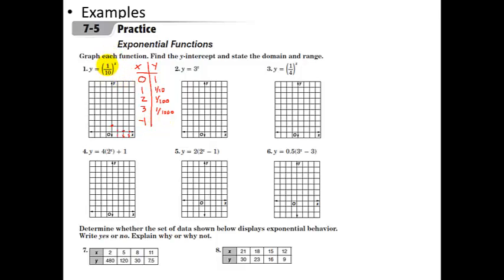If x is negative 1, we have 1 tenth to the negative 1. A negative exponent means flip it, so we get 10. And at negative 2 we get 100. So my function is skyrocketing on the left side. The graph comes down from extremely large values and very, very rapidly drops down to almost nothing. Every time I move forward one unit, I have only 1 tenth as much as before — going from 100 to 10 to 1 to 1 tenth to 1 one-hundredth, et cetera. I'm only keeping 10% of what I had each step forward.